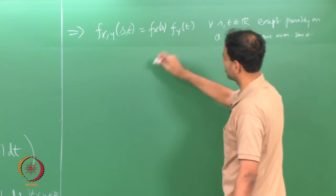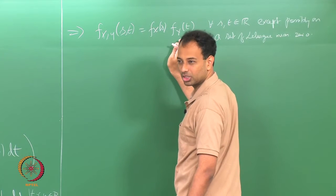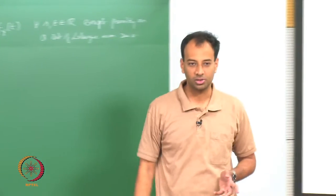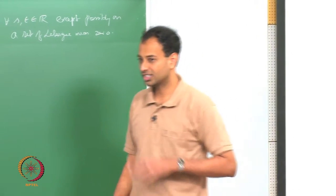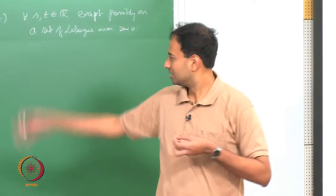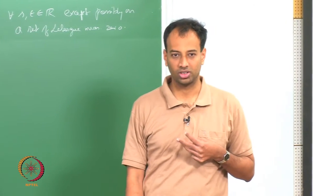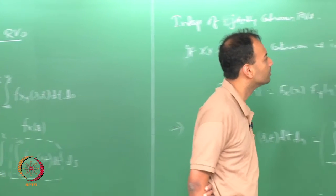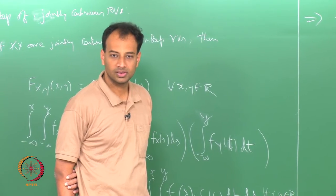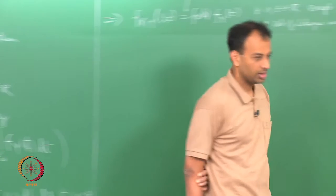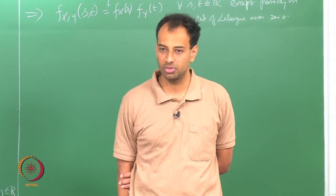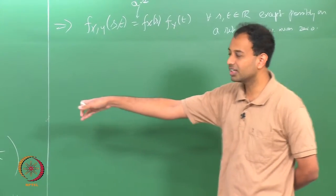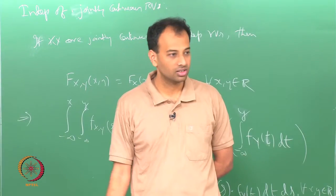This is called almost everywhere (a.e.) equality — equality holds everywhere except possibly on a set of Lebesgue measure zero — just like almost surely means except on a set of probability zero. So if x and y are jointly continuous and independent, the joint PDF factorizes into the product of the marginal PDFs. The converse is also true: if this relation holds almost everywhere, you can show x and y are independent.